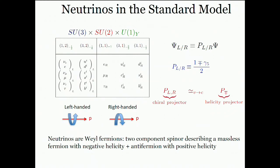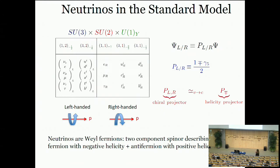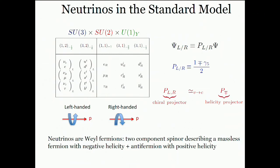With the standard model summarized in its particle table, neutrinos fit nicely as the upper components of the lepton doublets, and they are connected to two of the most striking features of this table. The first is the left-right asymmetry, which is nowhere more clear than with neutrinos, which only appear on the left with no counterpart on the right. Particles on the left are left-handed chiral states, which in the relativistic limit are left-handed helicity particles, while particles on the right are right-handed chirality states.